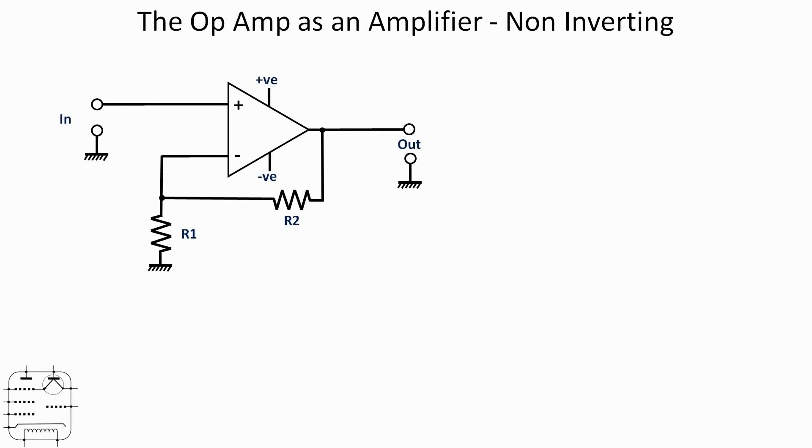So here's the general arrangement of the circuit. We've got the input on the left there going to the positive input of the op amp, and then we've got the output of the op amp going to the output but also connected via resistor 2 to the negative input.